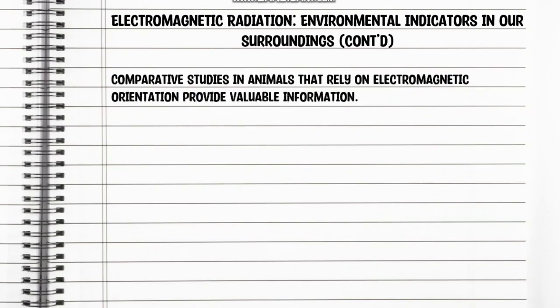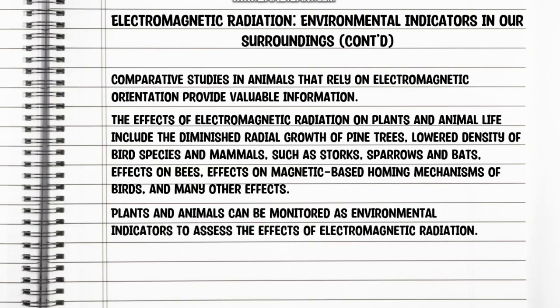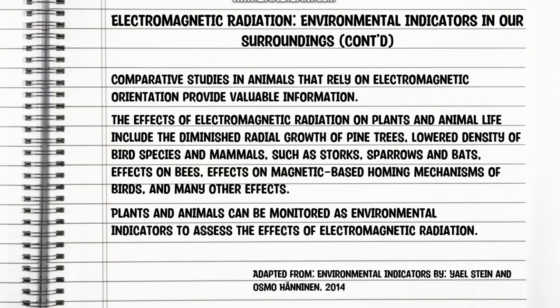Comparative studies in animals that rely on electromagnetic orientation provide valuable information. The effects of electromagnetic radiation on plants and animal life include the diminished radial growth of pine trees, lower density of bird species and mammals such as torques, sparrows, and bats, effects on bees, effects on magnetic-based homing mechanisms of birds, and many other effects. Comparative studies in plants and animals can be monitored as environmental indicators to assess the effects of electromagnetic radiation. This is adapted from Environmental Indicators by K.L. Stain and Osmo Haninen in 2014.